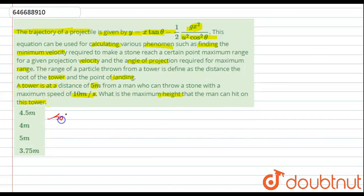This is a very simple type of question actually. First of all, let's understand by means of a diagram. This is the ground. Now let's suppose this is the tower whose height is small h.